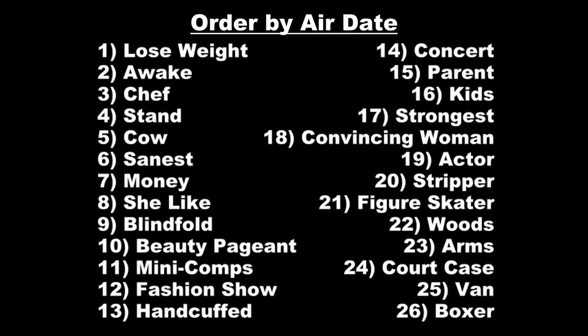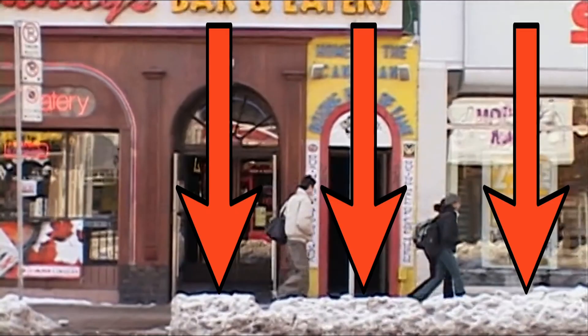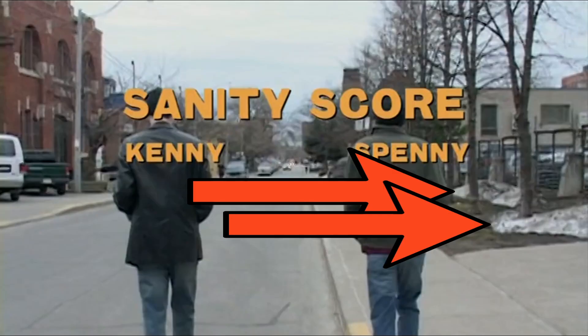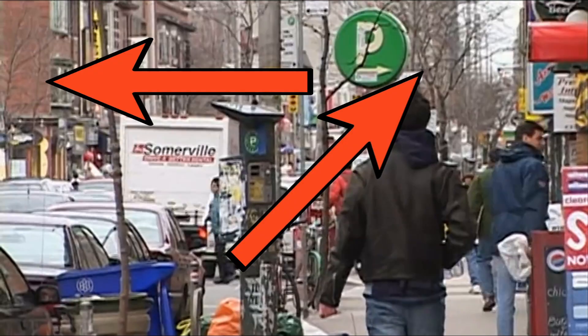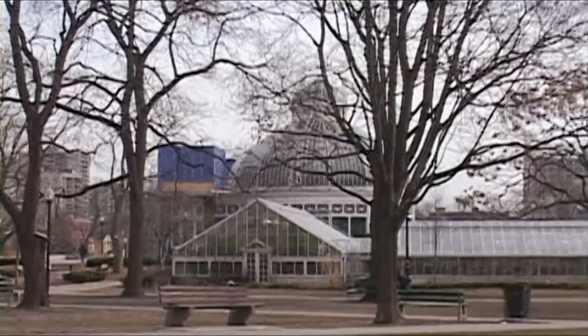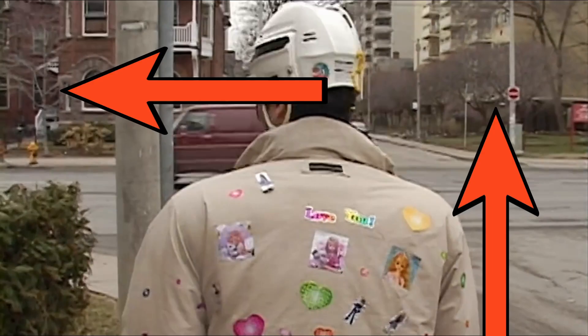So now the grouping. Winter episodes include Lose Weight, Sanest, Money, She-Like, Blindfold, and Handcuffed. Snow can be seen in the outdoor shots of Lose Weight, Sanest, and Handcuffed. And bare trees can be seen in Money, She-Like, and Blindfold.